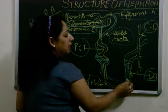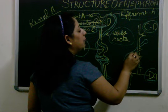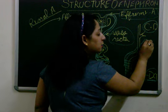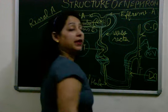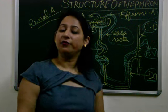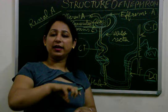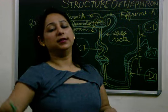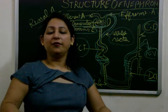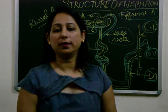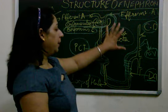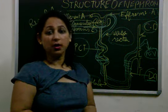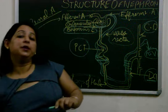This blood which was in vasa recta, moving to vasa recta, will finally join the renal vein. This renal vein will now carry the blood into the body which will be passed to all the parts of the body. Now this finishes up the structure of nephron. Now a very important part which is related to it is the structure of malpighian capsule.